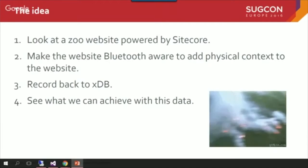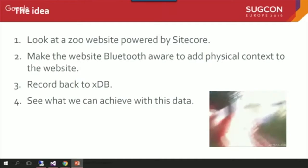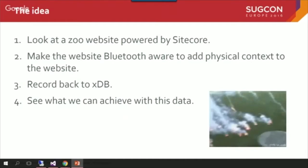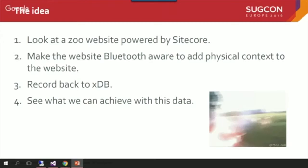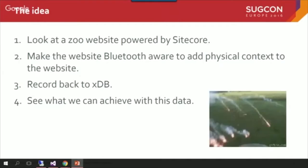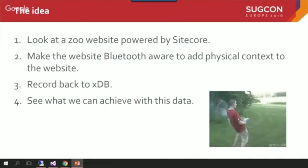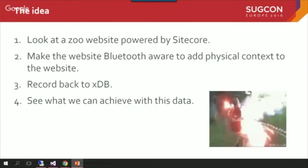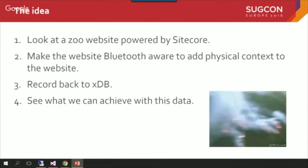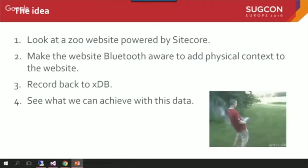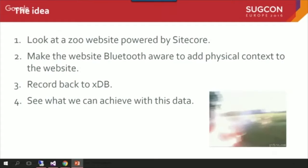The idea here is to have Bluetooth beacons dotted around the park. As people walk around, they're going to be pushed a notification on their phone, which will encourage them to visit parts of the website really relevant to the bit of zoo they're at. We're going to record some of this data back to XDB because it's really valuable to marketers, and then we can see what we can achieve with this data.